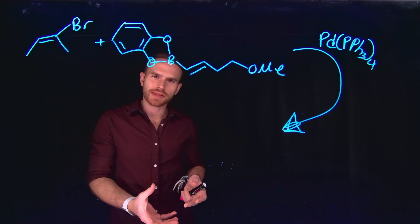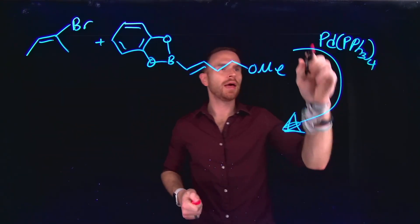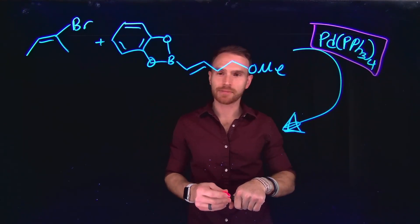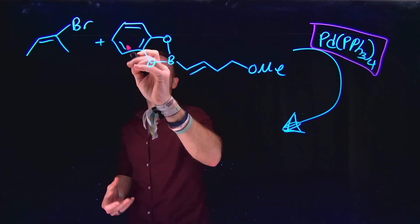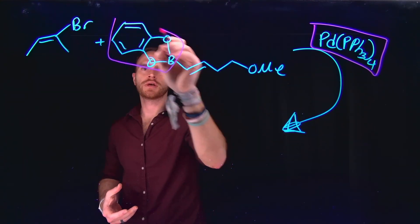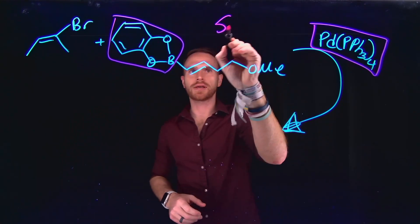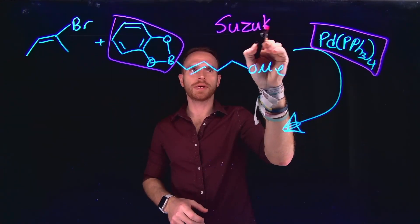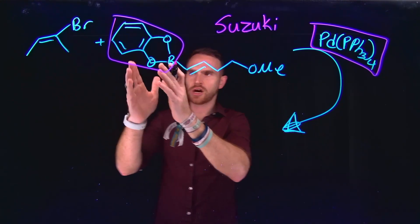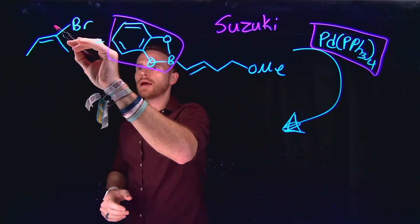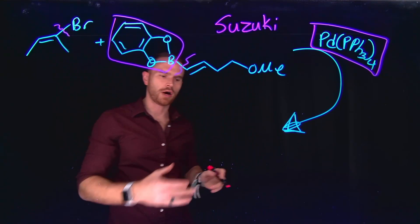For this question, you were told that this is a Suzuki coupling. However, we could have determined that it was a Suzuki coupling because I see that the catalyst being used is some palladium species, specifically tetrakis triphenylphosphine palladium zero. And I also see that one of the coupling partners is this organoboron species. And remember that the transmetallating reagent in Suzuki coupling is always going to be that organoboron species. So therefore, I know that I'm doing a cross-coupling between these two reactants. And importantly, I'm doing it from this vinyl halide and at this organoboron location.